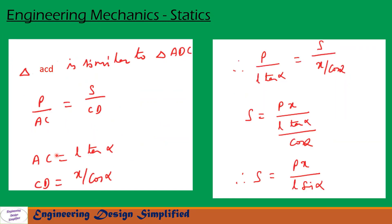Now let us substitute AC and CD in this equation. So we get P by L tan alpha equal to S by X by cos alpha.